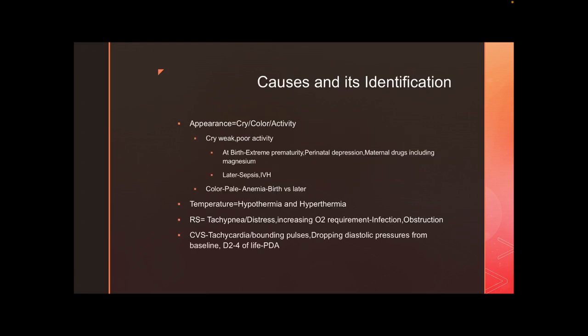Once you have a properly defined apnea, identify the cause. Assess the baby's cry, color, and activity. At birth, consider extreme prematurity, perinatal asphyxia, or maternal drugs like magnesium causing respiratory depression. If it happens later — day two or three — rule out sepsis and intraventricular hemorrhage, especially in extreme preterms. If the baby is pale, think anemia. On day one, nearly 50 percent of preterm babies can have IVH; rule out fetomaternal hemorrhage or twin-to-twin transfusion as well.